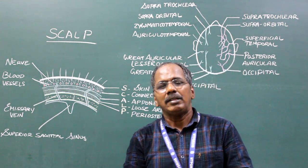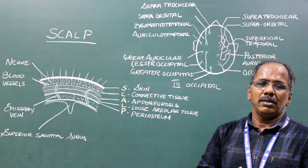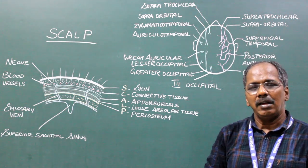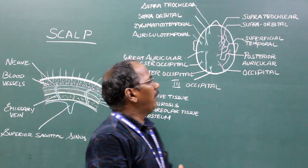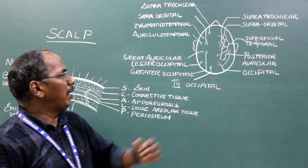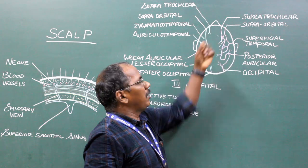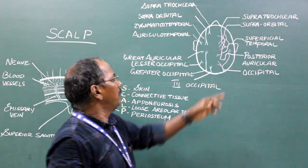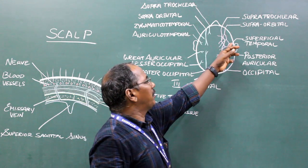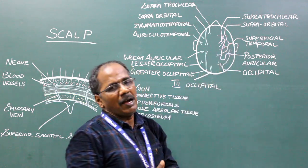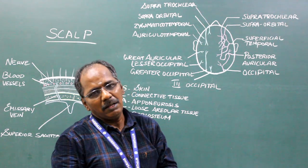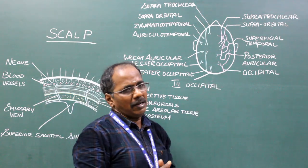Blood supply. The scalp is rich in blood supply. It is supplied by five main arteries: number one, supratrochlear artery; number two, supraorbital artery; number three, superficial temporal artery; number four, posterior auricular artery; number five, occipital artery.